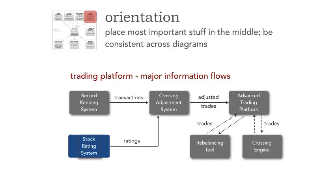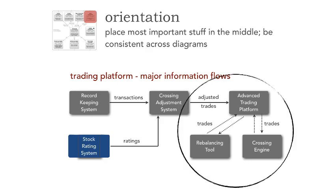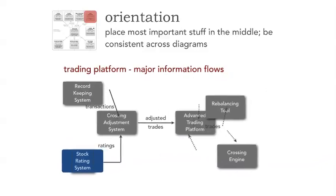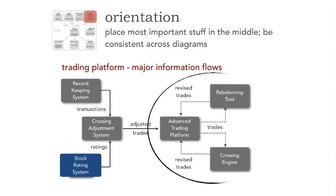What's most important to you? Look at the orientation of this diagram. What is most important here? You might say the crossing adjustment system, but in fact it's the ATP — the advanced trading platform. Make sure when you do diagrams, you don't put what you want everybody to focus on stuck in the upper right-hand corner. I'll redraw the architecture diagram so that the orientation is placed with your focus on the advanced trading platform and those interactions, paying attention to where you want people to focus rather than just making it fit on the page.